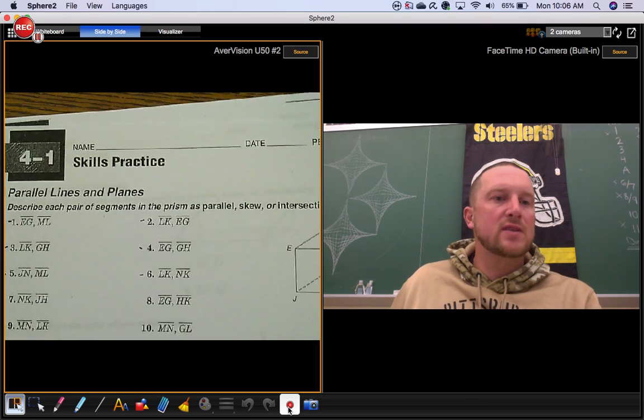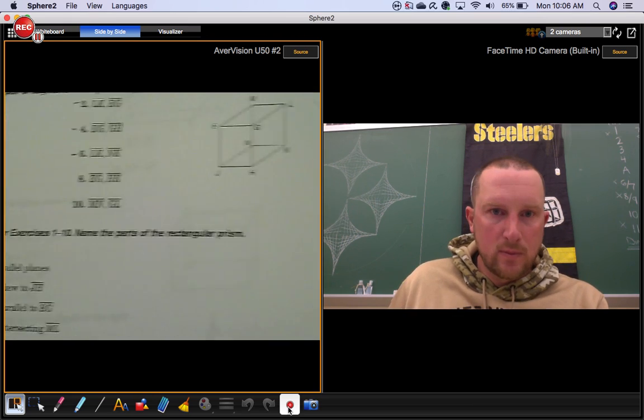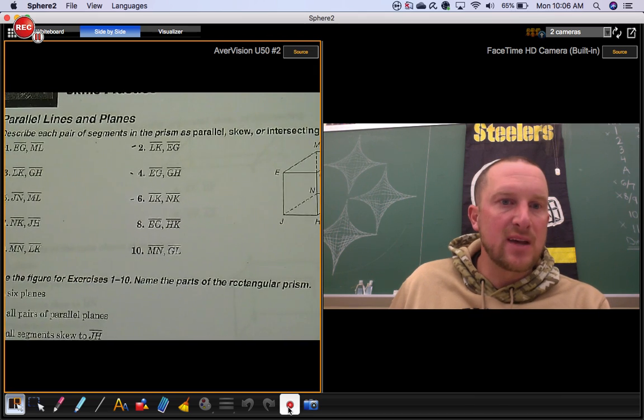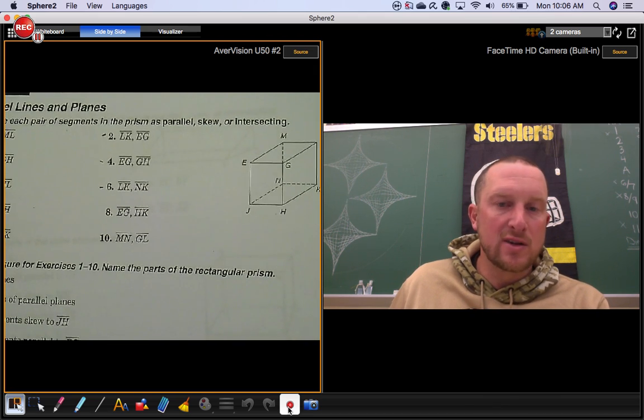We're going to look at the skills practice for section 4.1. We're going to use this diagram and describe each pair of segments as parallel, skew, or intersecting.